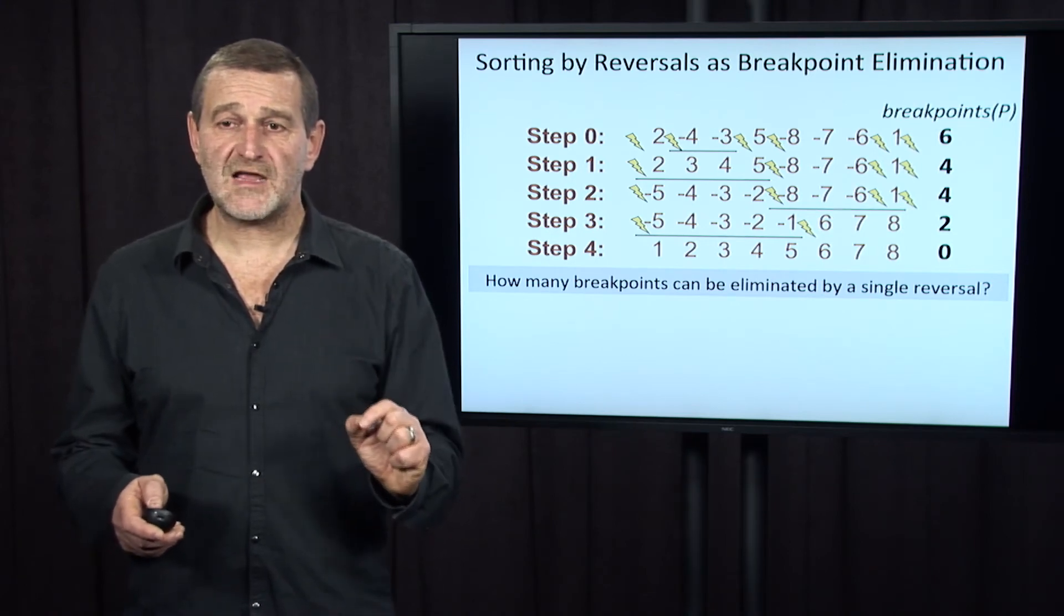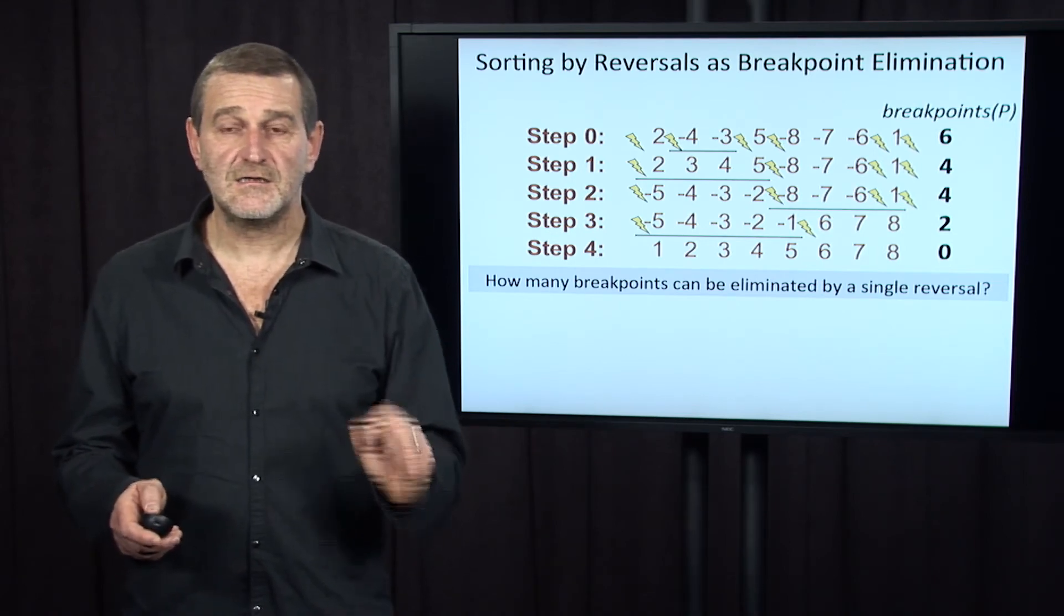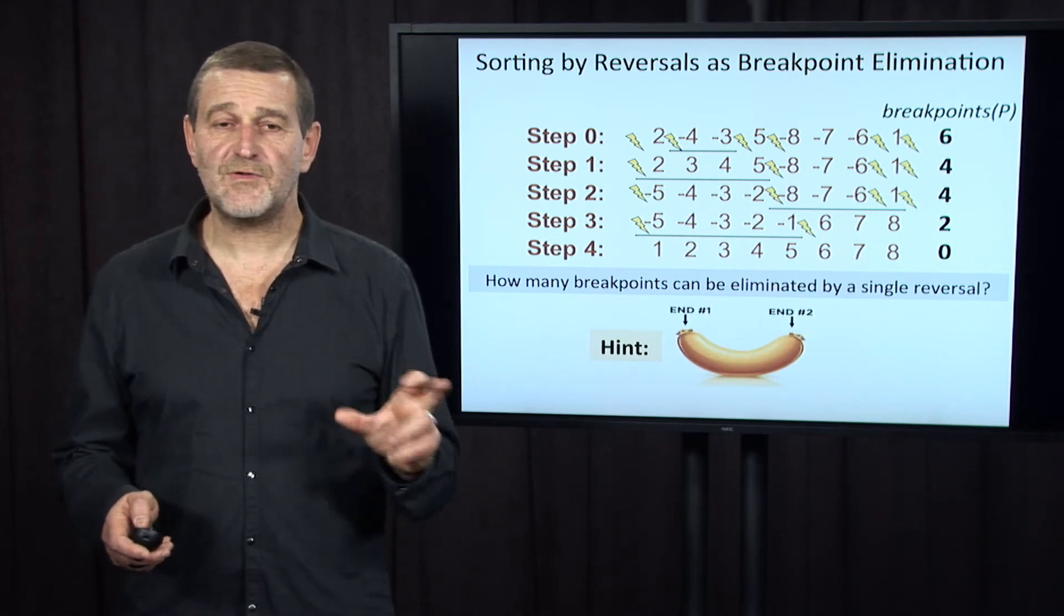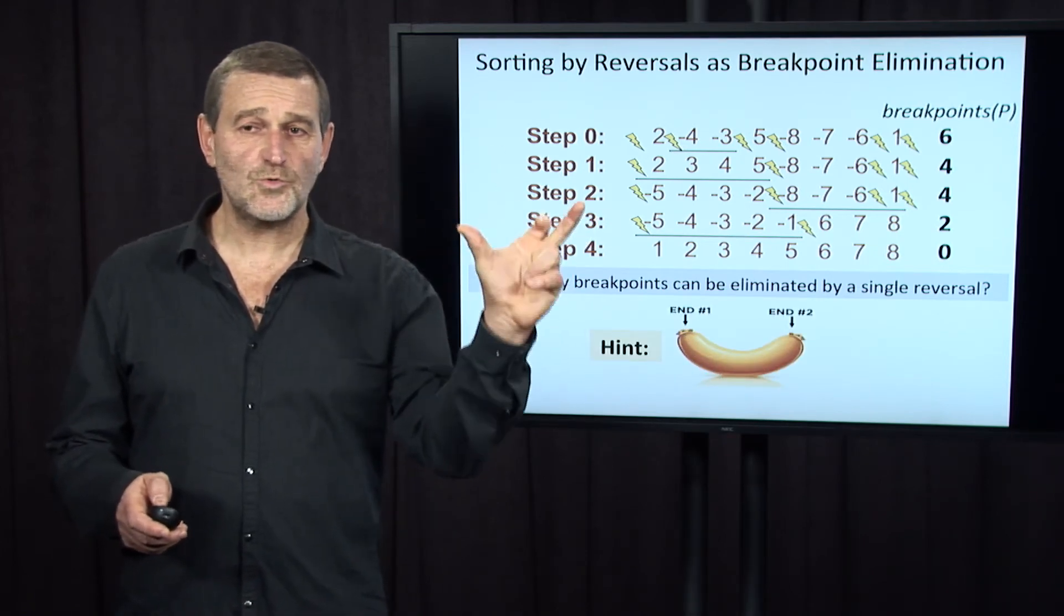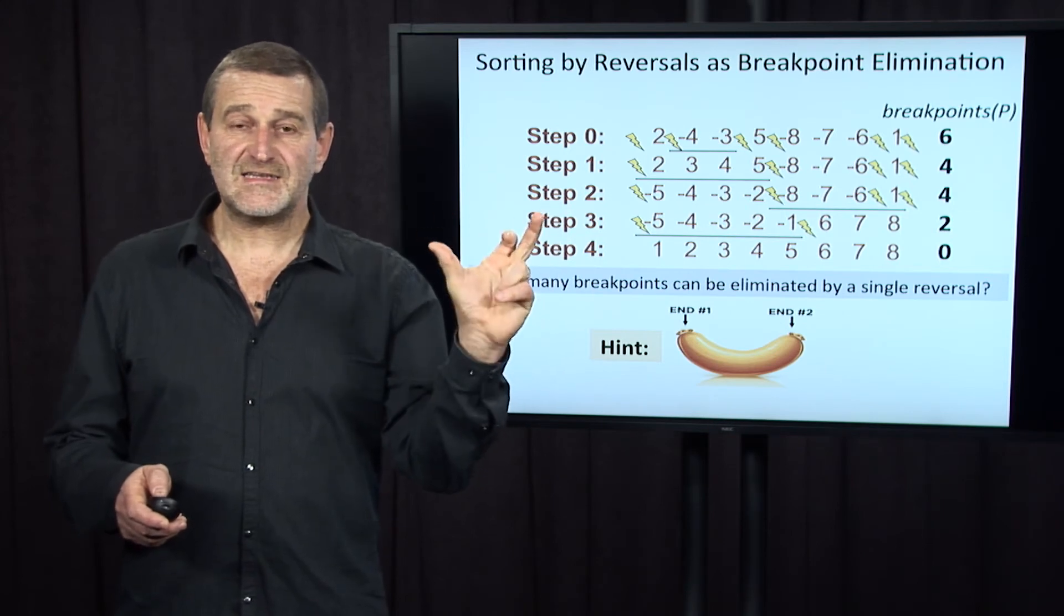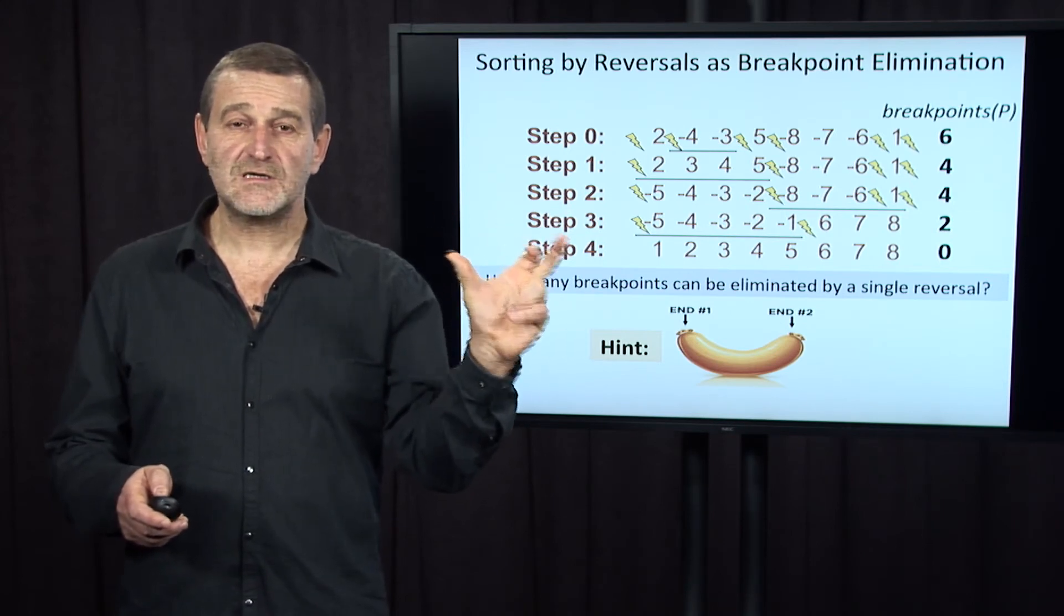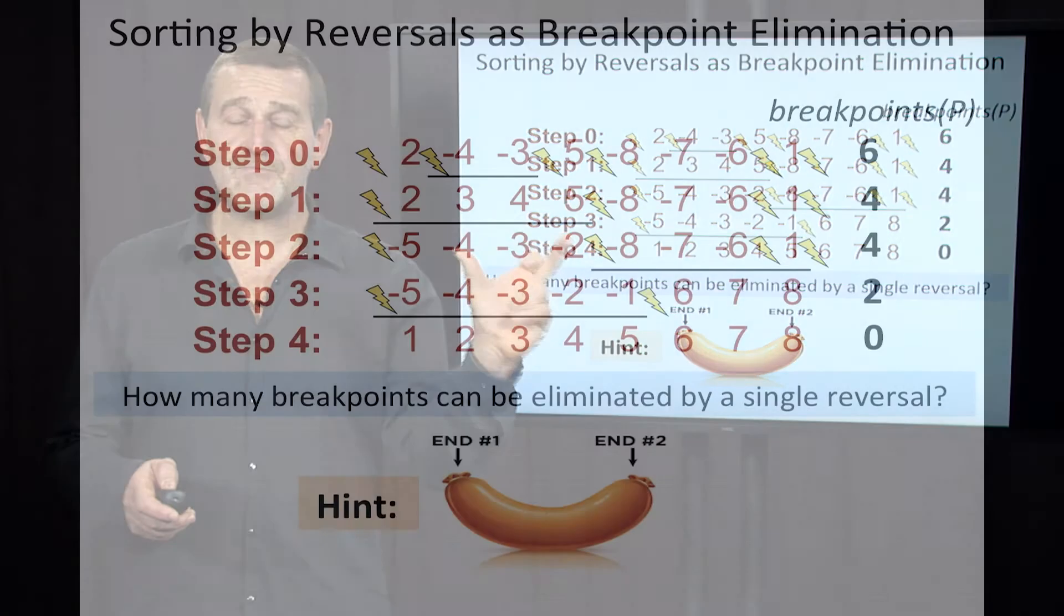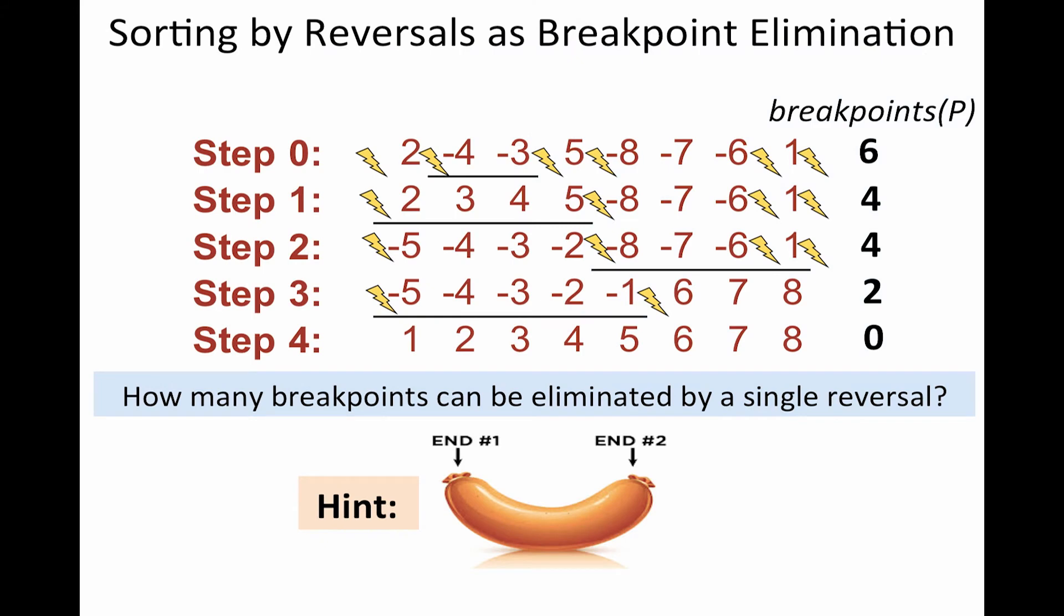Next question, how many breakpoints can be eliminated by a single reversal? Well, the answer to this question is simple. Reversal has two ends. And nothing happens with these breakpoints on the left and on the right of this endpoint. Also, every breakpoint that existed within this interval will remain the breakpoint. And therefore, the only breakpoints that can be affected by reversals are the two breakpoints on the end of the reversal.